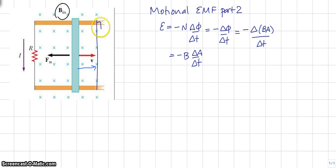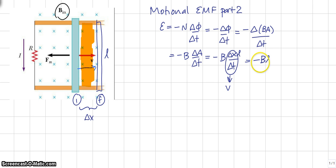We considered a small change in area here in this space between where the bar was at its initial location and where the bar is at the final location. It said it moved distance delta X and length L. So, the change in area, we said, was delta X times L over delta T. And then we recognized that delta X over delta T is the speed. So, the EMF is BLV.